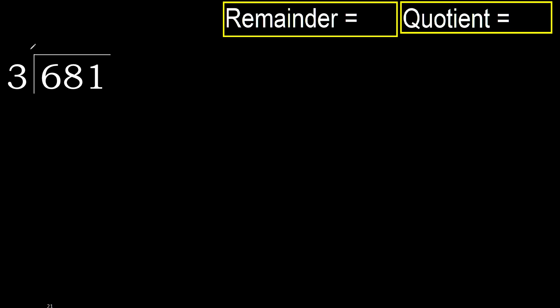681 divided by 3. 6 is not less, therefore start with 6. 3 multiplied by which number is nearest to 6, but not greater?